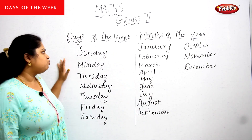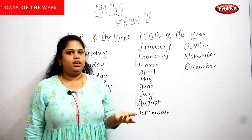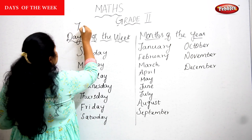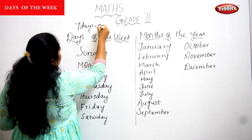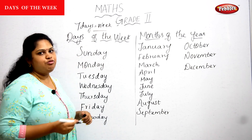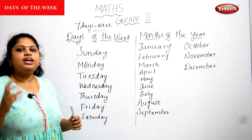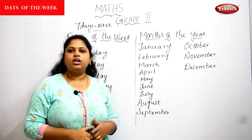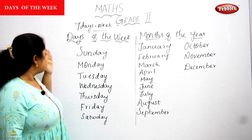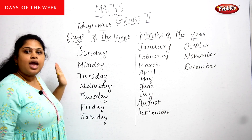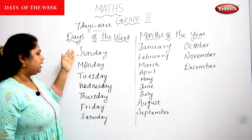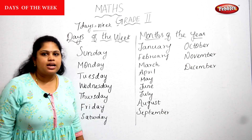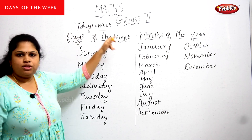Today we are going to see about the days of the week. A week means seven days — seven days is equal to one week. How many days in a week? Seven days in a week. The seven days are: Sunday, Monday, Tuesday, Wednesday, Thursday, Friday, and Saturday.